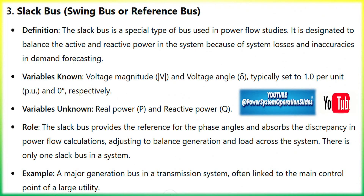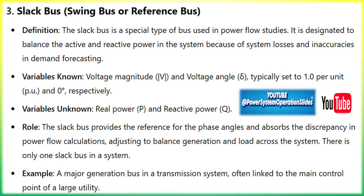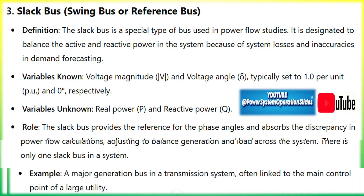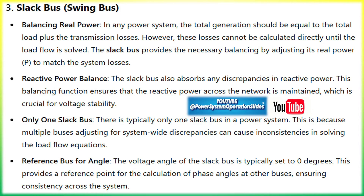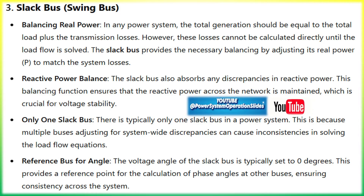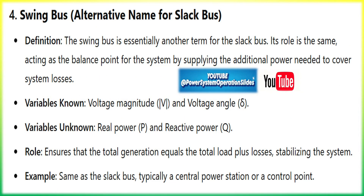Reactive power impact: for certain loads like motors or air conditioners, the power consumed is not purely active real power P, but also reactive power Q, which is crucial for maintaining voltage levels. Reactive power management is essential because insufficient reactive power can lead to voltage drops and system instability. Power factor: load buses are often assessed based on their power factor, which is the ratio of real power P to apparent power S. A low power factor indicates a high proportion of reactive power, leading to inefficiencies.